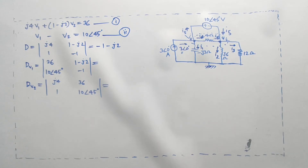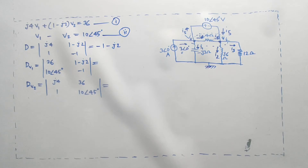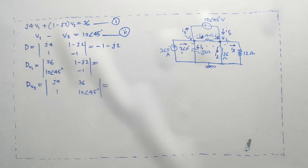Digital engineering, electrical engineering. Current, current, current. Minus 10 angle 45 degrees into 1 minus 2j. 10 angle 45 degrees into 1 minus 2j. Minus, minus 36. One one four vector value.